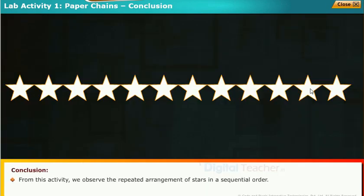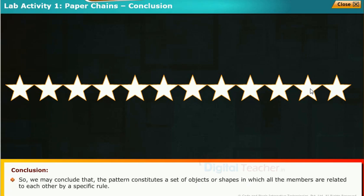Conclusion: From this activity, we observe the repeated arrangement of stars in a sequential order. So we may conclude that the pattern constitutes a set of objects or shapes in which all the members are related to each other by a specific rule.